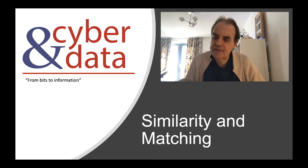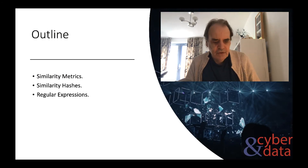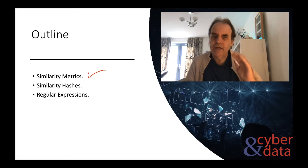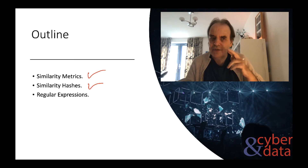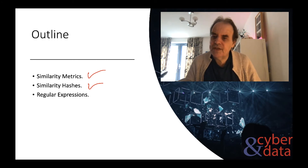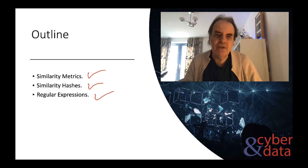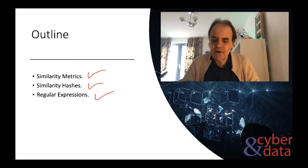Let's look at similarity and matching and how we can take two different data entities and see how similar they are to each other. The three main areas we'll look at are similarity metrics — can we get a scoring system that tells us how close one data element is to another? Whether it's possible to create similarity hashes of messages to measure differences between two data elements, and the usage of regular expressions within cybersecurity to search and mine for data elements.